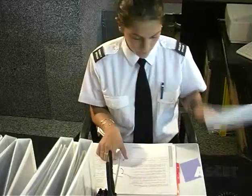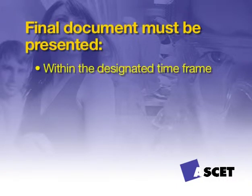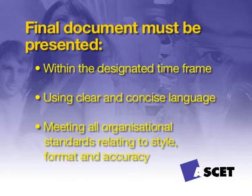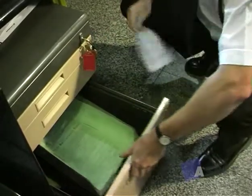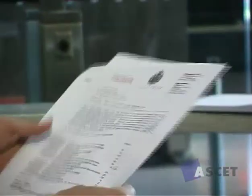If your reports are to be reviewed, a draft may need to be forwarded to the relevant persons such as your supervisor or client for review. Feedback should then be sought and any constructive feedback or requested changes and inclusions should be made into the final document. Your final document should be presented within the designated timeframe using clear and concise language and meeting all organisational standards relating to style, format and accuracy. Your supervisor will be able to explain the standards used in your workplace. Finally, make sure you securely store any retained material in accordance with your organisational procedures. You may handle sensitive and confidential information in your role as a security officer and it's your duty to ensure that this information remains safe at all times.